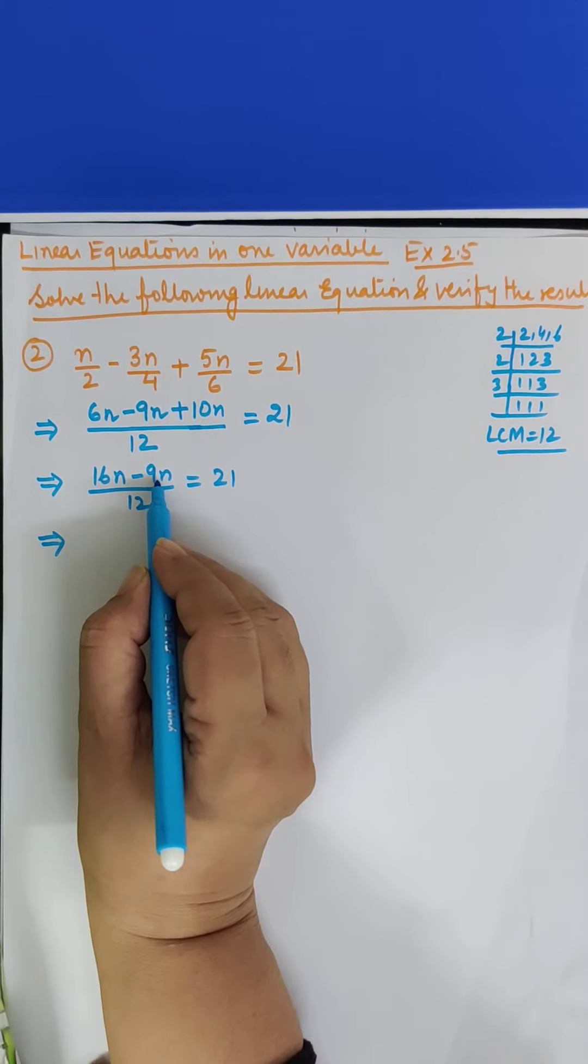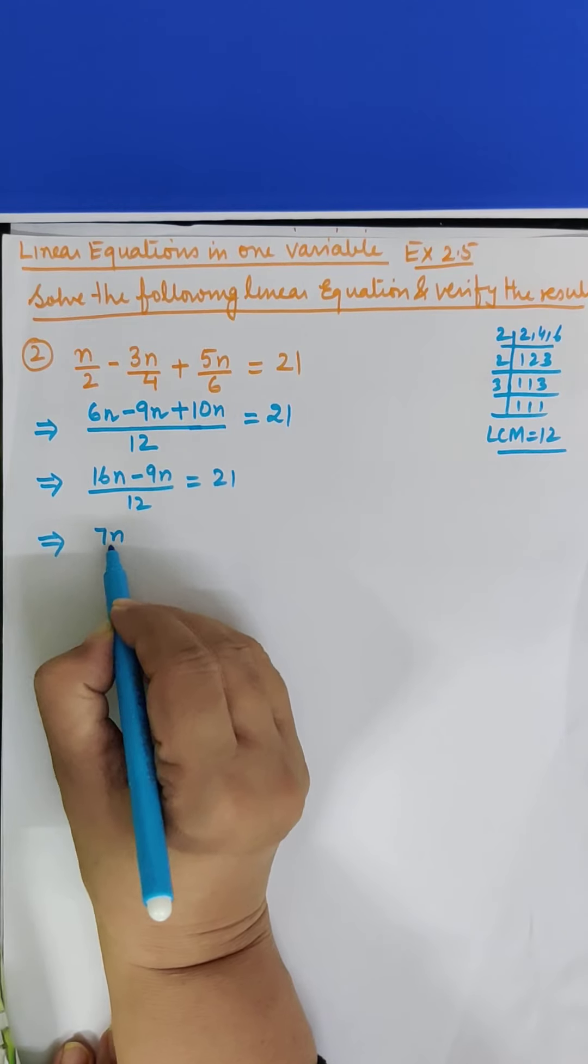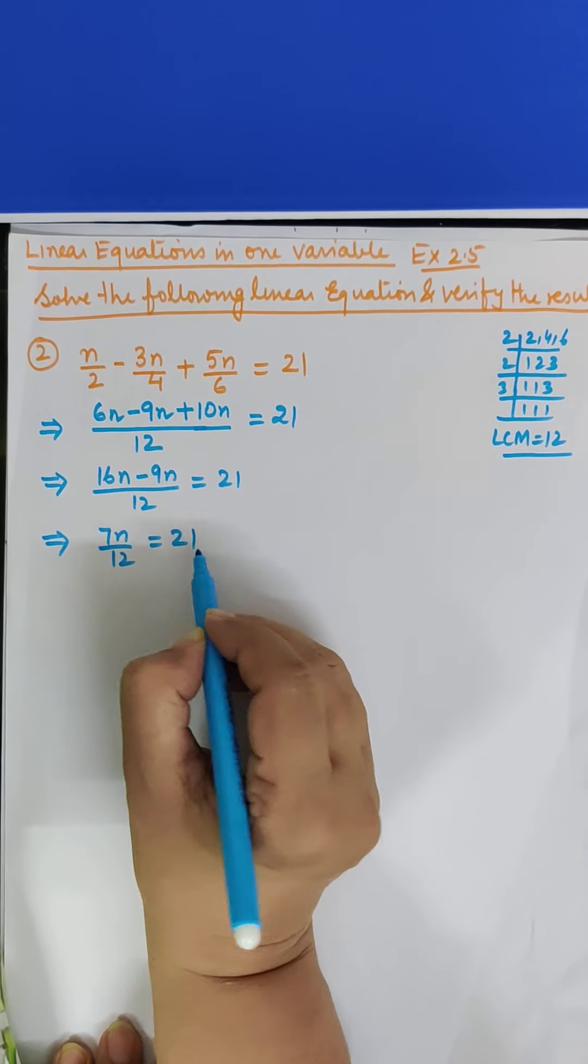Now 16 minus 9, we do it. So we get 7. Meaning 7N upon 12 is equal to 21.